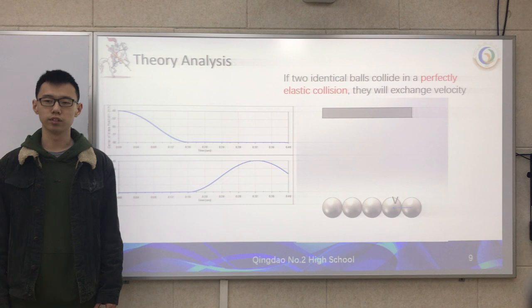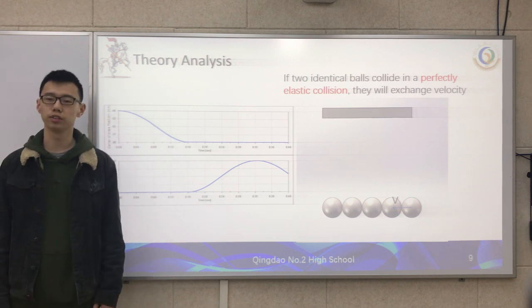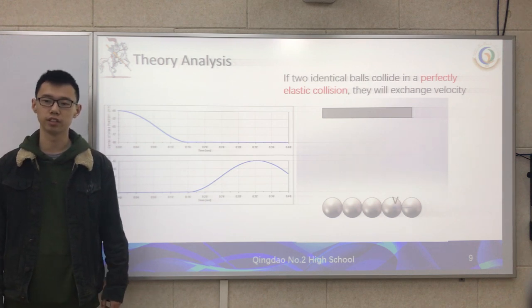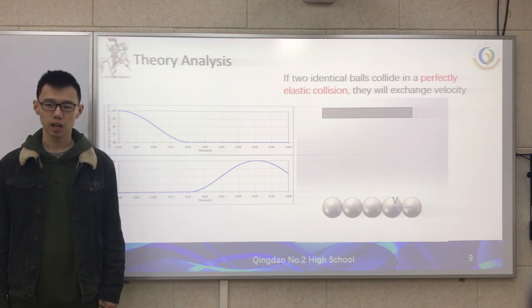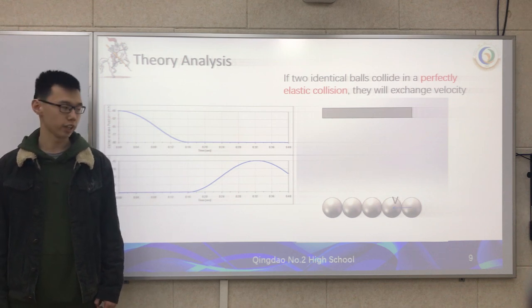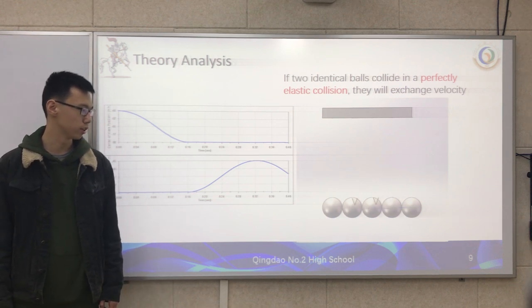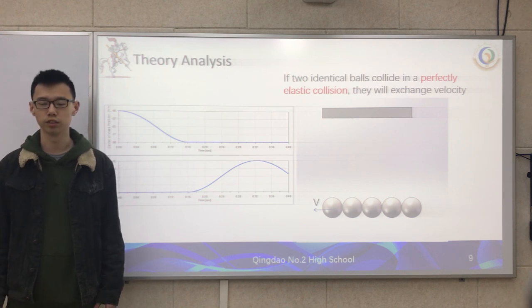The reason the final ball is lifted at the same height as the first one is that if two identical balls collide in a perfectly elastic collision, they will exchange their velocities. The velocity transfers from the first ball to the second, to the third, to the fourth, and then to the final one. So the final ball has the same amplitude as the first one.